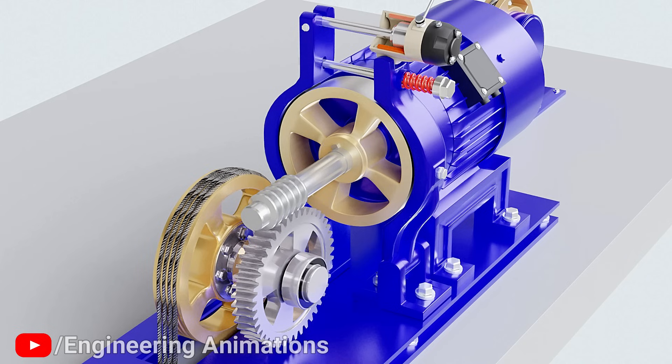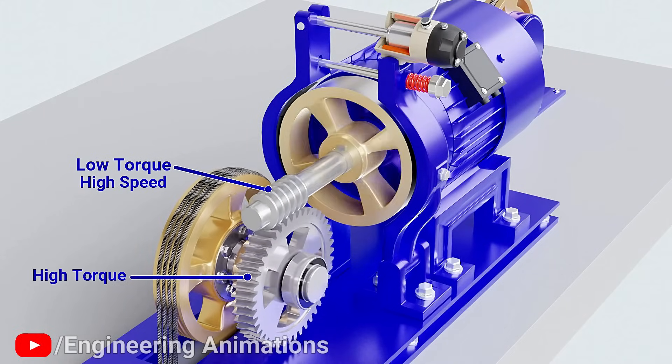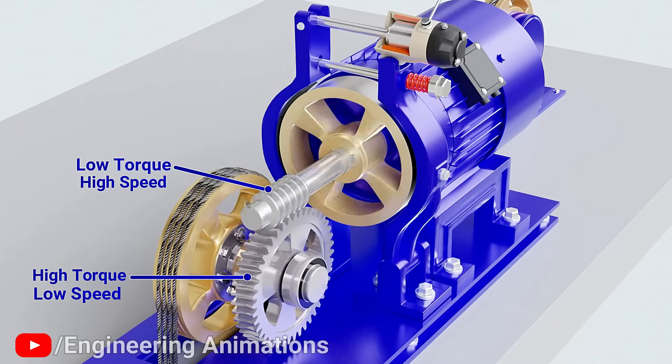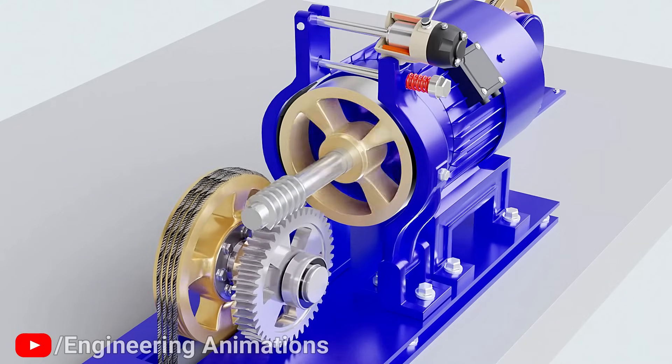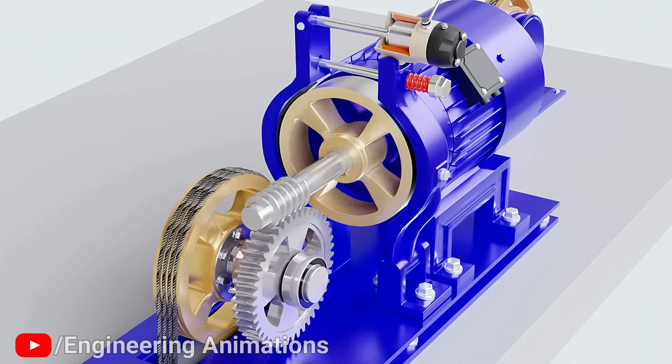Next to this brake sits a worm wheel mechanism. It has a very high gear reduction ratio. It can convert low torque, high speed motor input to a very high torque, low speed output. This is ideal for an elevator because the elevator car doesn't need to travel fast, but it definitely requires high torque to operate.